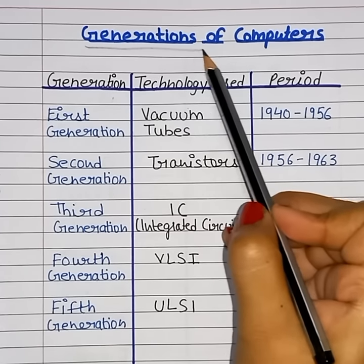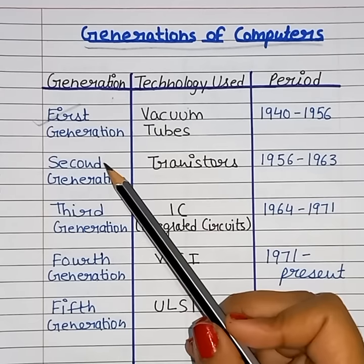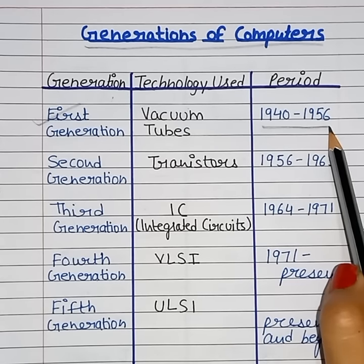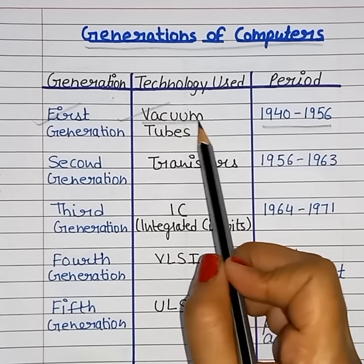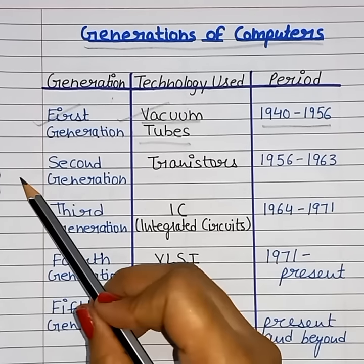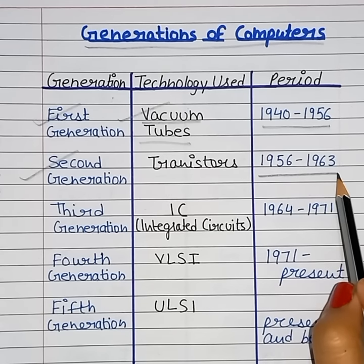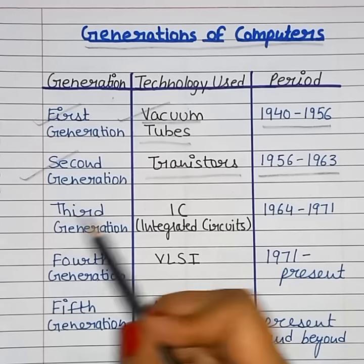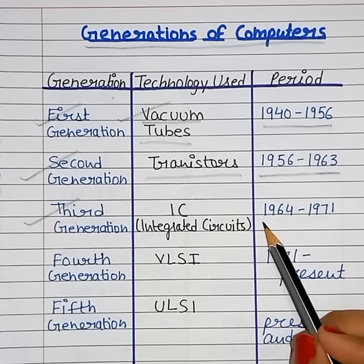Generations of computers: First generation computers, period 1940 to 1956, component used: vacuum tubes. Second generation computers, period 1956 to 1963, component used: transistors. Third generation computers, period 1964 to...